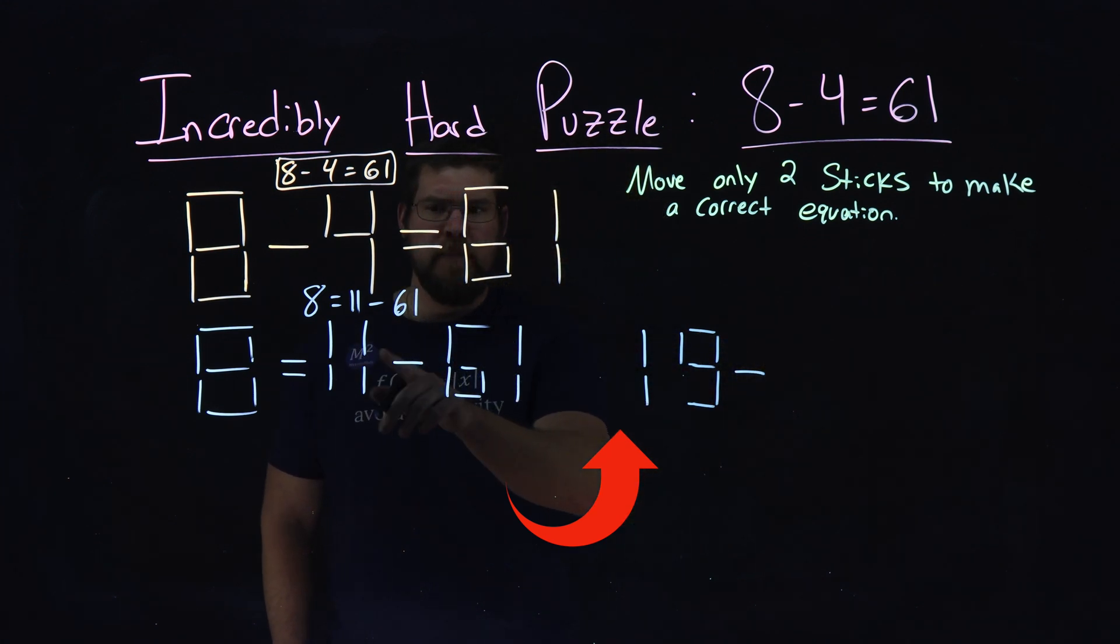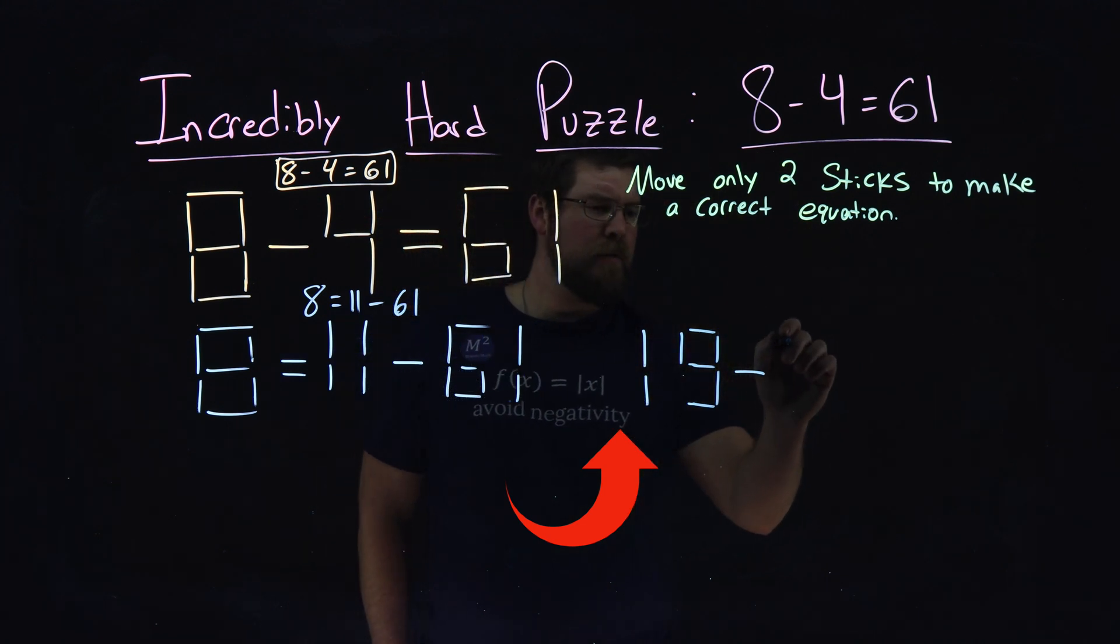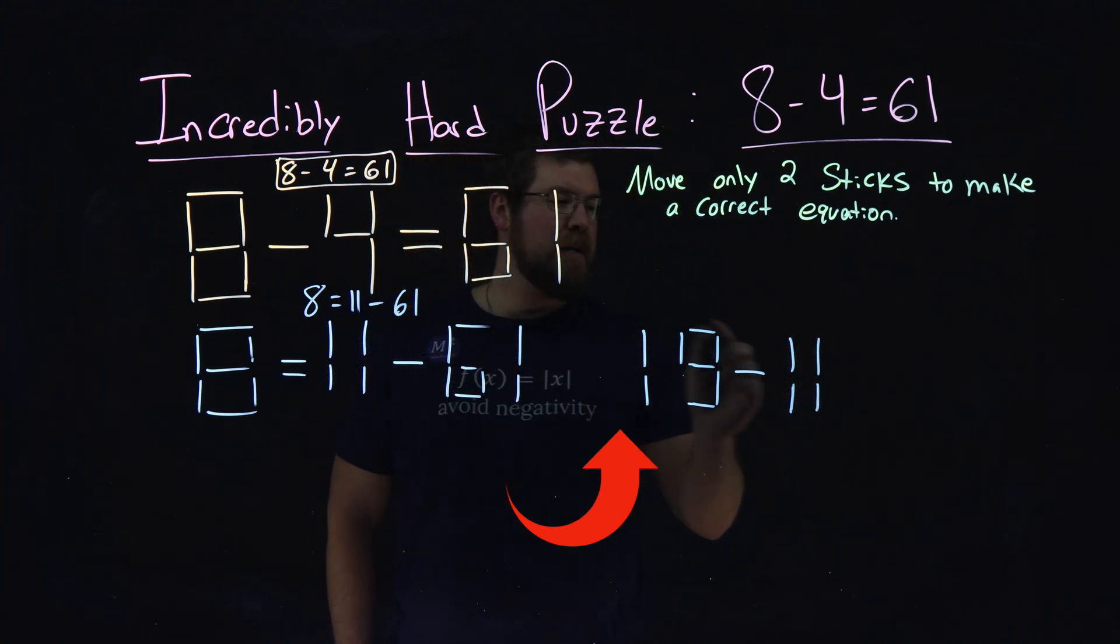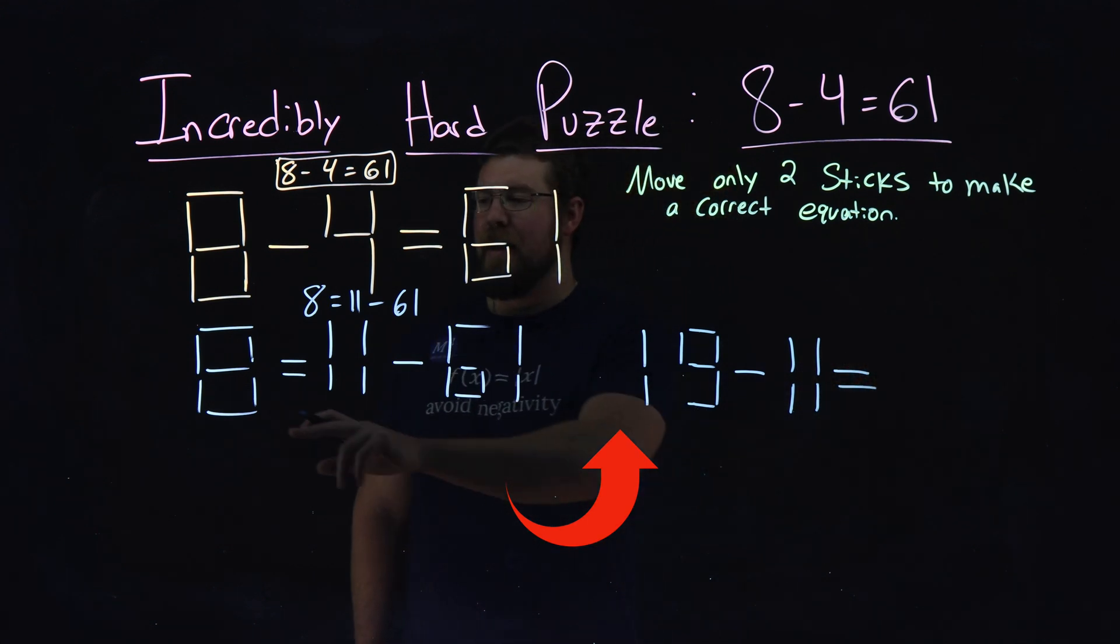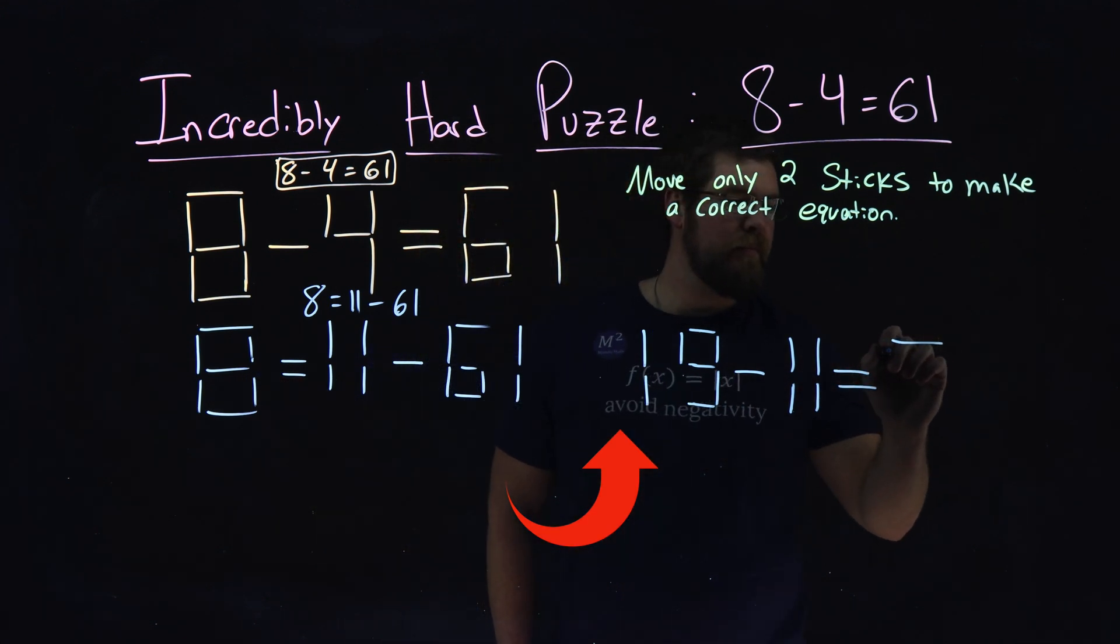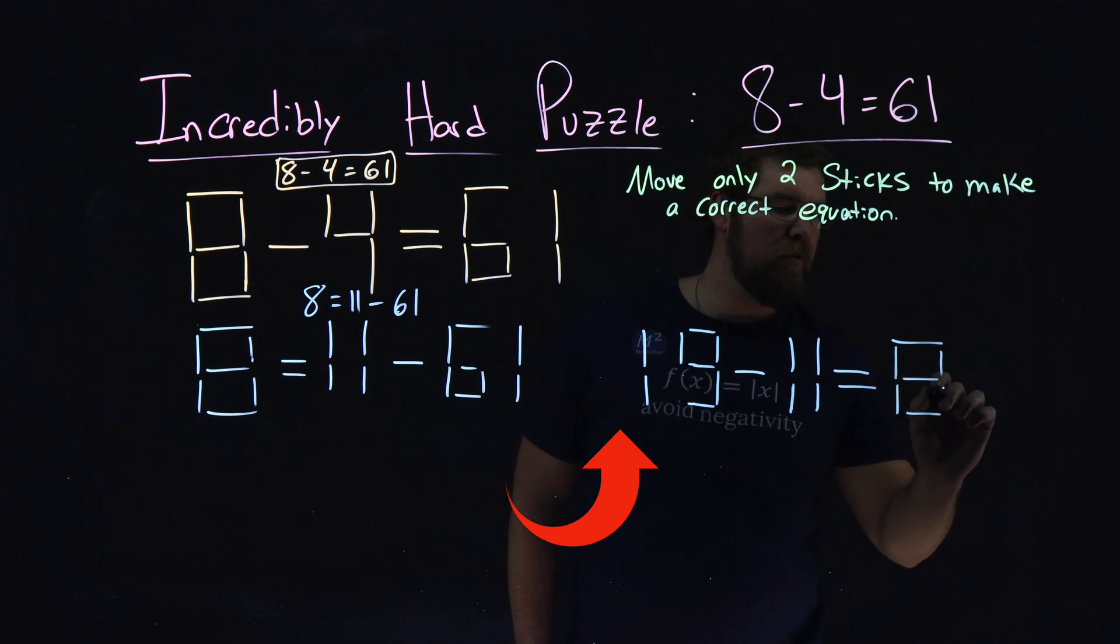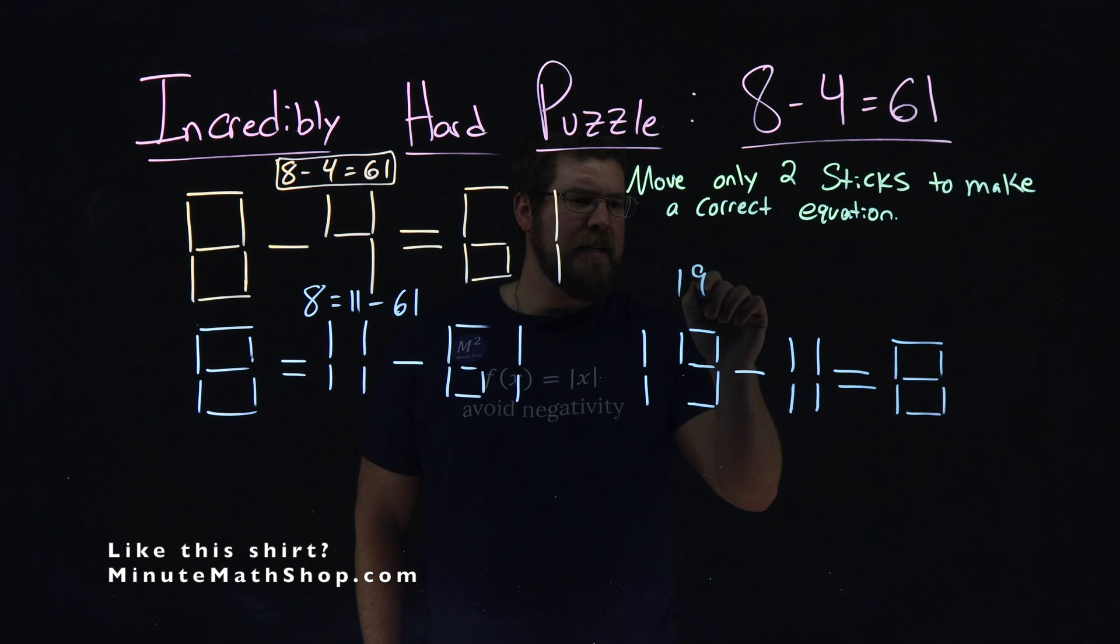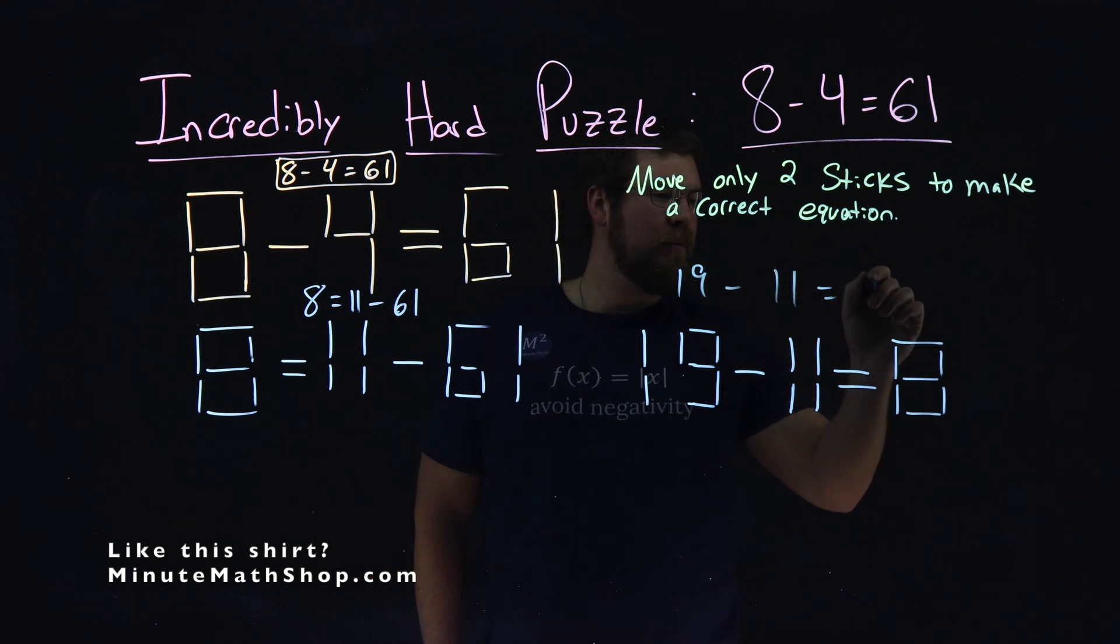Minus sign is still right there. 11 rotated over, still the 1, 1 gives you that 11. Equal sign is still the same. And then the 8 here is still the same when rotated over 180 degrees, flipped upside down. We have 19 minus 11 equals 8.